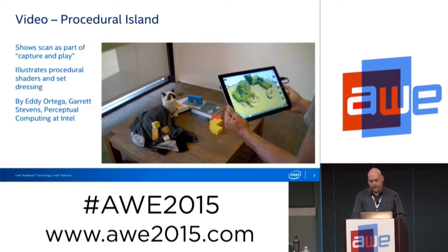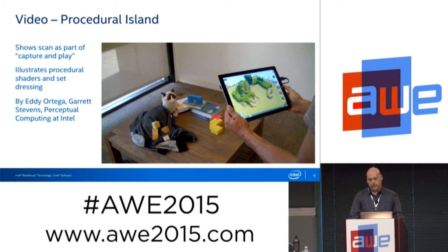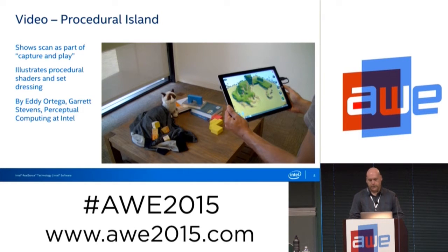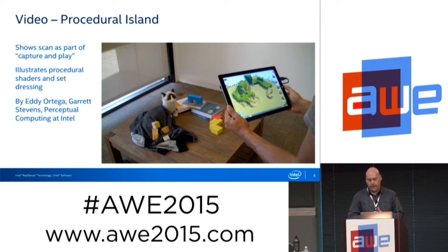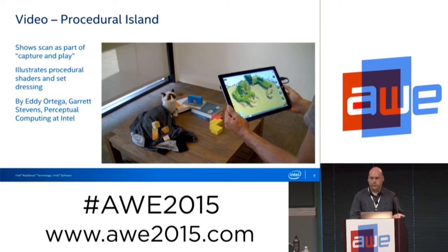Another style of game: this is a proof of concept illustrating more of the capture-and-play scenario. The setup has players given a task to build up a scene — in this case with blocks and books on a table — then scan it, and it gets transformed into something different, like little islands. This is running in the Unreal Engine to illustrate procedural shading and procedural set dressing effects.